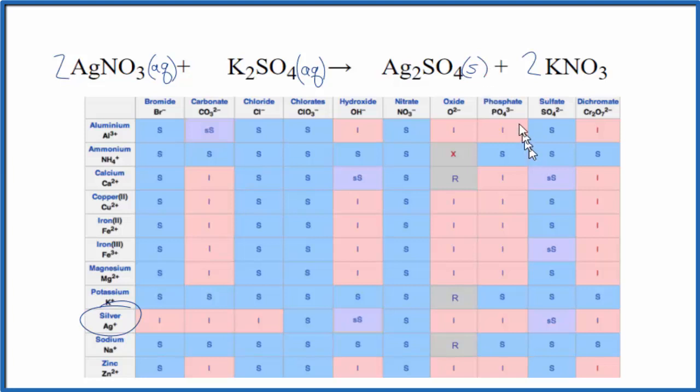It's actually a precipitate. It'll fall to the bottom of the test tube. KNO3, that's another nitrate. So that's going to be soluble. We'll write AQ after that. So we have our states.